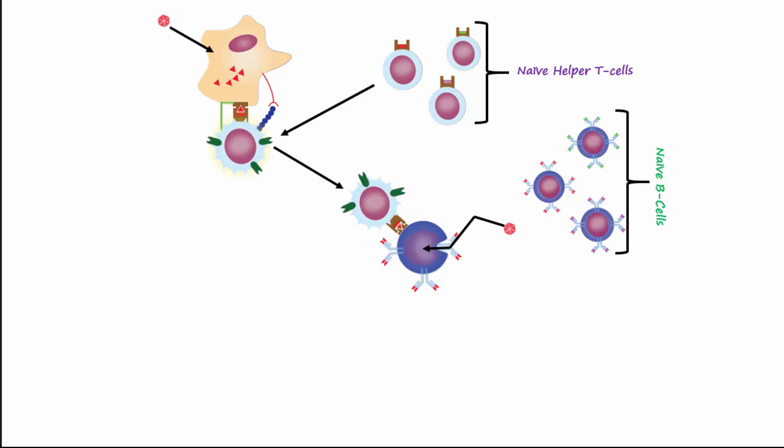The CD4 receptor on the helper T cell will bind to the antigen fragment expressed on the MHC class 2 molecule of the B cell, and CD40L of the T helper cell will bind to CD40 on the B cell. The B cell then expresses cytokine receptors on its surface.